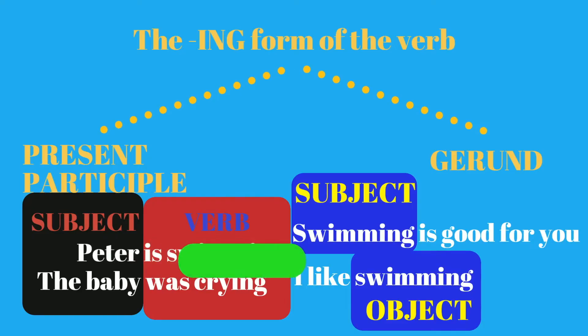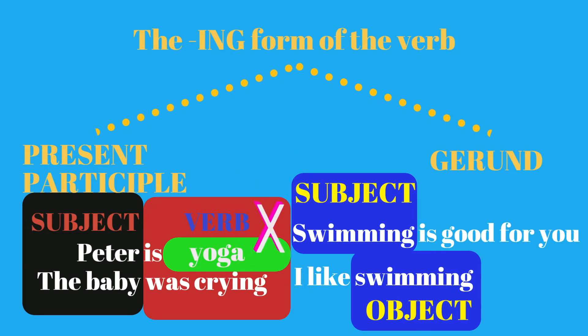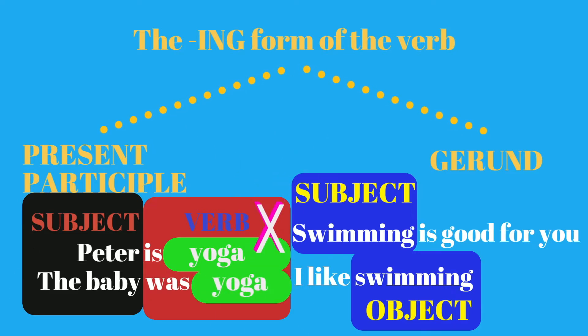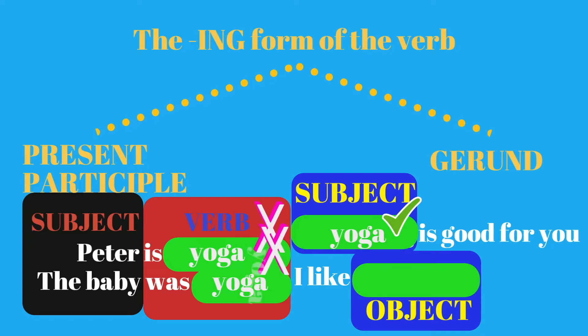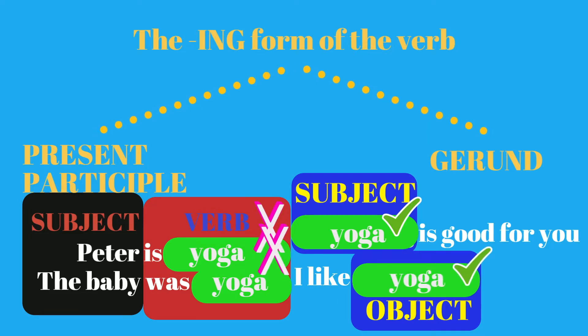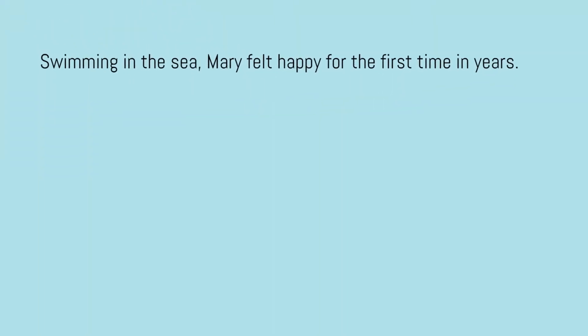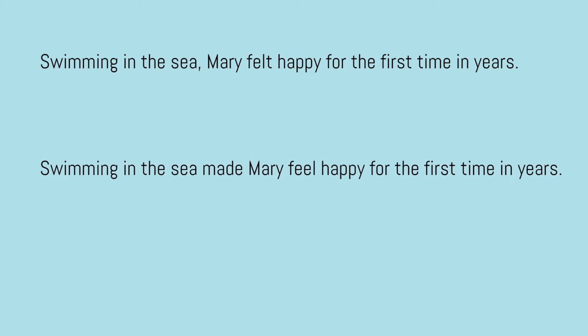One way of testing that is to see whether the -ing component can be replaced by a noun. Sometimes it can be a little tricky. For example, the following sentences seem fairly similar, but in one of them the -ing component is a participle while in the other it's a gerund. "Swimming in the sea, Mary felt happy for the first time in years." "Swimming in the sea made Mary feel happy for the first time in years."